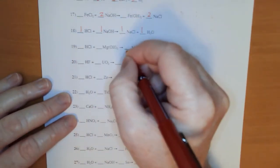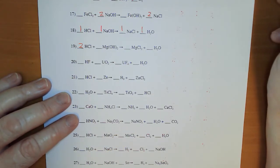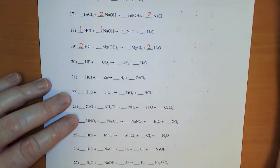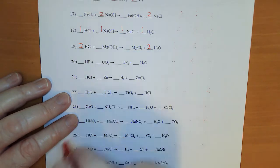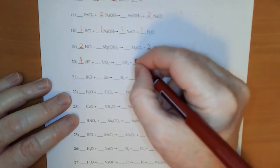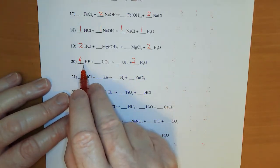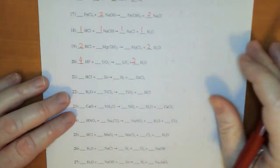For 19: those 2 chlorines over there tell me I'm going to have to put a 2 there. Then 4 hydrogens total — 2 here and 2 here — so I'm going to have to put a 2 there. For number 20: 4 on this fluorine — so this is going to have to be a 4. Oxygen — I've got 2, so I'm going to have to put a 2 there. 2 times 2 is 4 hydrogens, 4 fluorines, 1 uranium, 2 oxygens. We're good.